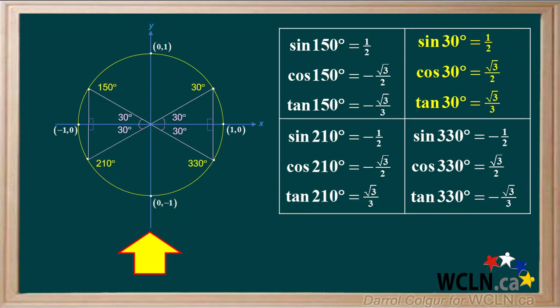It's also good to review other angles with a reference angle of 30 degrees that have exact values. These include 150 degrees, 210 degrees, and 330 degrees. Using the values of trig functions for 30 degrees and knowing the signs of sine, cosine, and tangent in each quadrant will help you remember these.